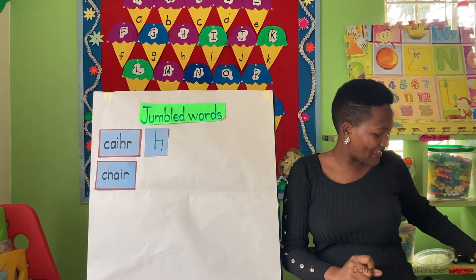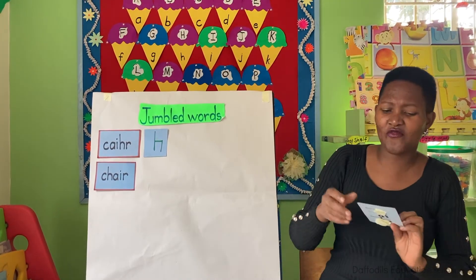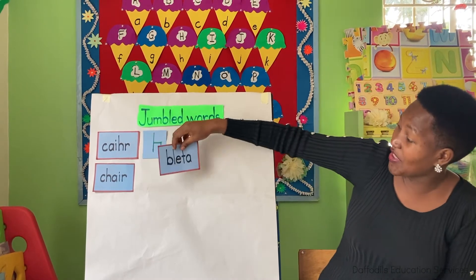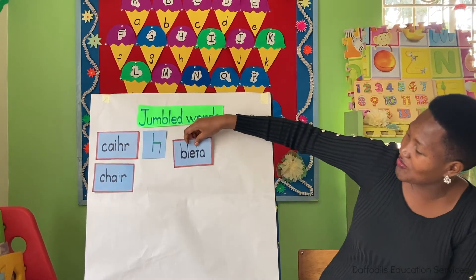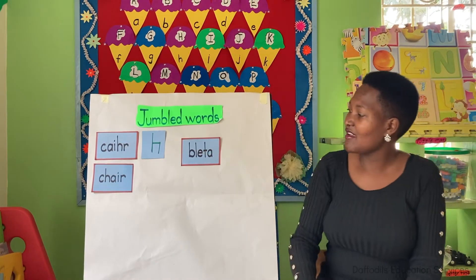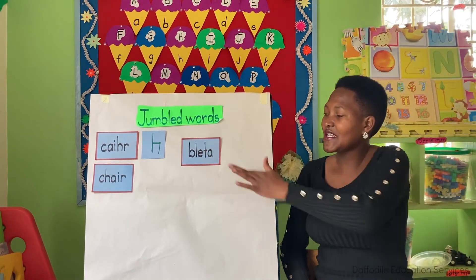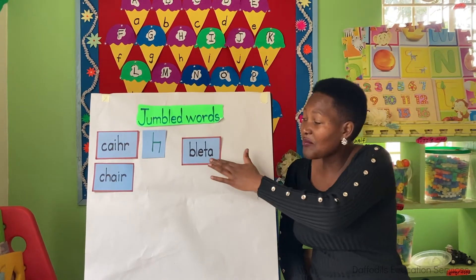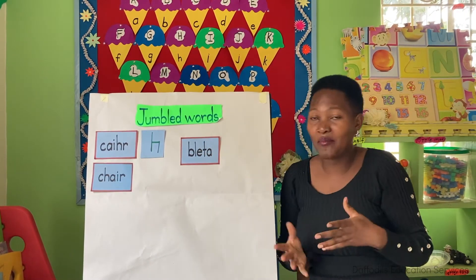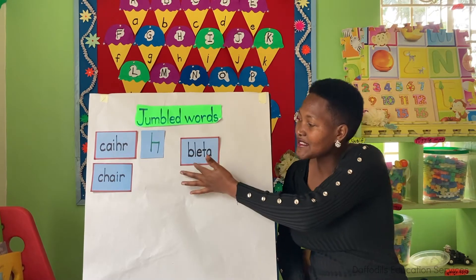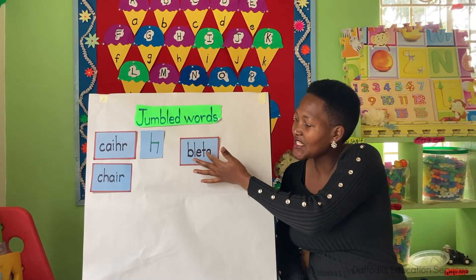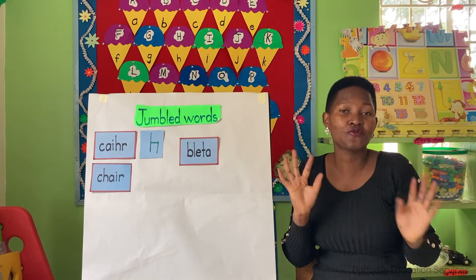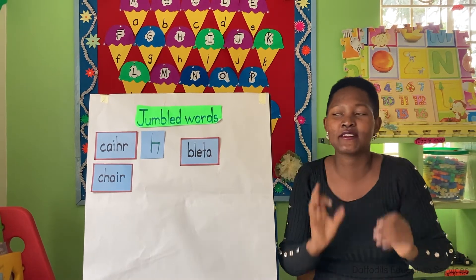Now teacher has another word. She wants to see if you can easily tell — she's going to trick you again with another jumbled word. This is another jumbled word. As teacher said, jumbled words are words which are mixed up; you can see the letters are mixed up. B-L-E-T-A — just mixed up. Teacher is trying to trick you to see if you can easily tell.